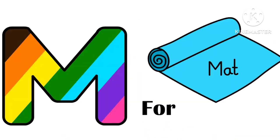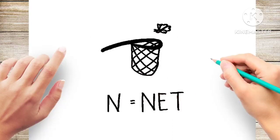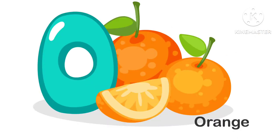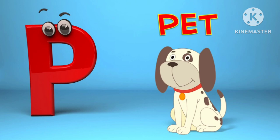M is for mat, m-m-mat. N is for net, n-n-net. O is for orange, o-o-orange. P is for pet, p-p-pet.